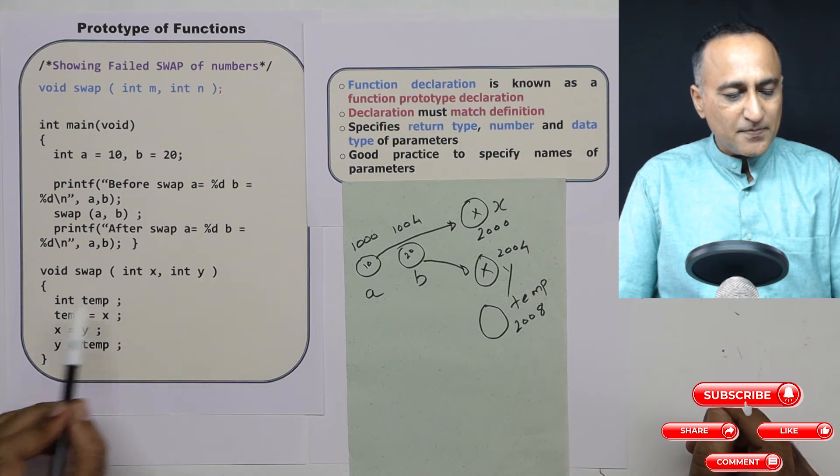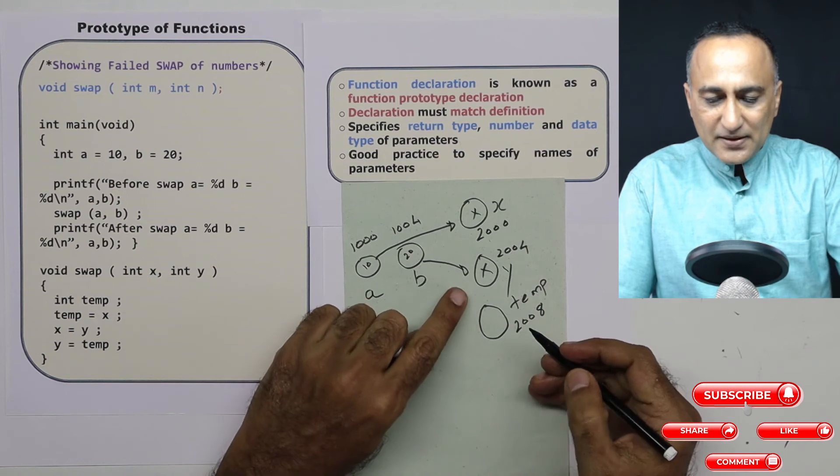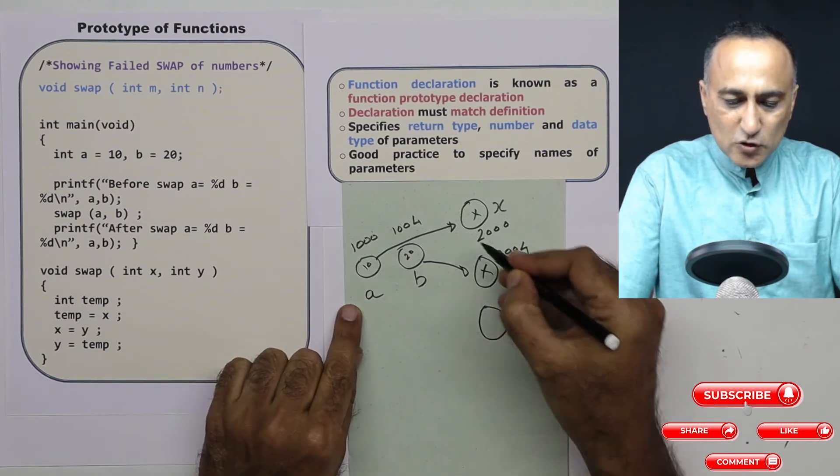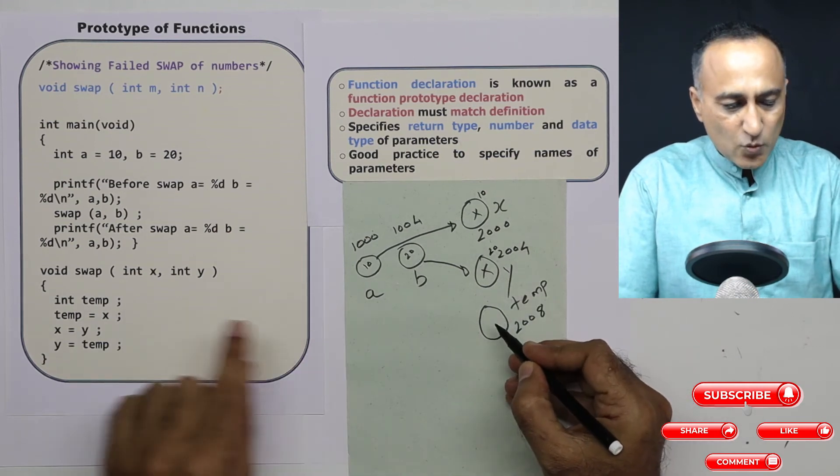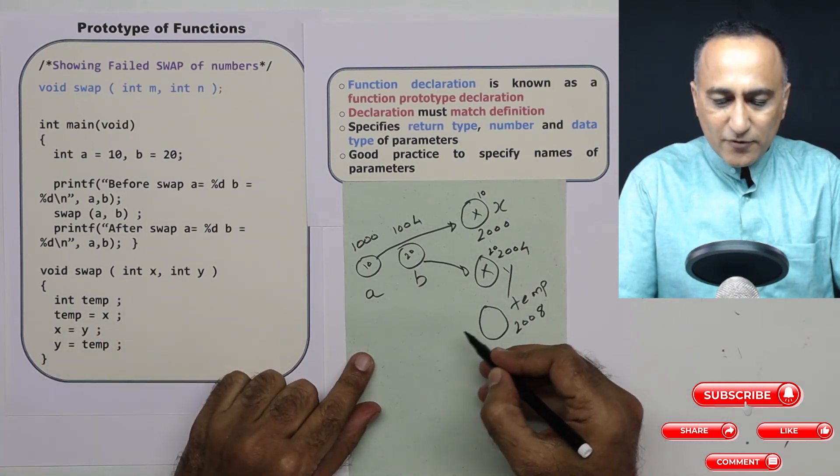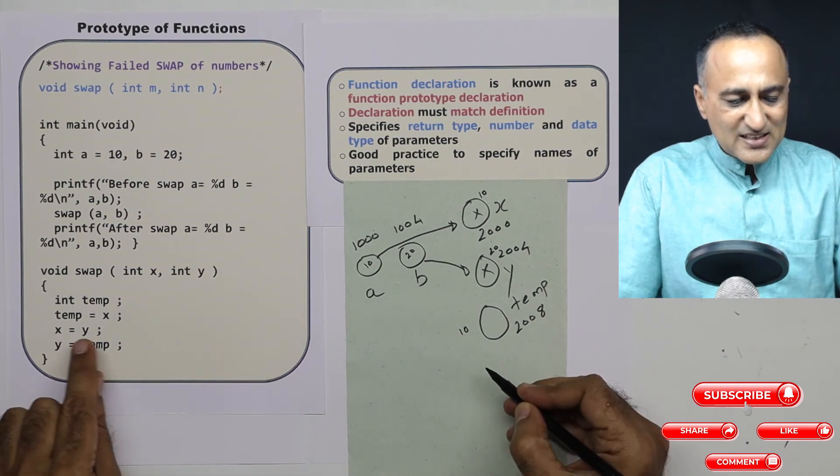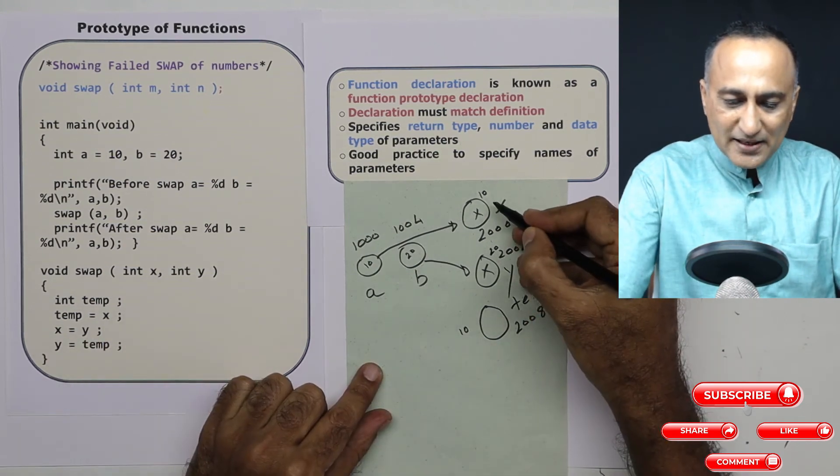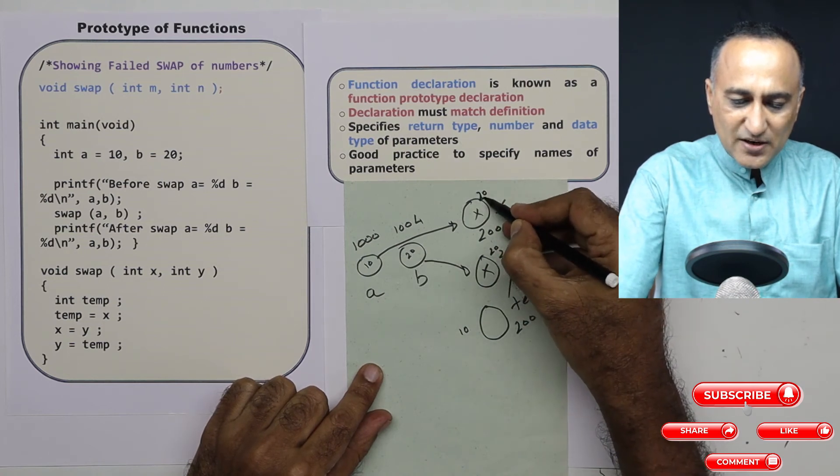So what happens is A is copied here, B is copied here. Then temp is assigned the value of x. So temp takes the value of x. So this fellow was 10, this fellow was 20. So what has happened, temp has taken the value of x. So temp has ended up becoming 10. X has taken the value of y. That means now x from 10 has ended up taking the value of y, which is 20.